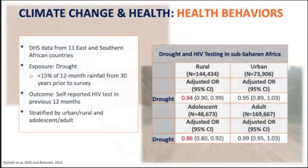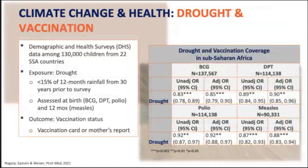As another example of how climate change could affect HIV-associated health behaviors, we used DHS data from 11 countries in sub-Saharan Africa to look at the association between drought in the previous year and self-reported HIV testing. We found that drought was associated with lower odds of testing among both rural and adolescent populations. We also looked at associations between drought and child vaccination coverage using DHS data among about 130,000 children from 22 sub-Saharan African countries, and found that those exposed to drought had lower odds of uptake of four different childhood vaccinations: BCG, DPT, polio, and measles.